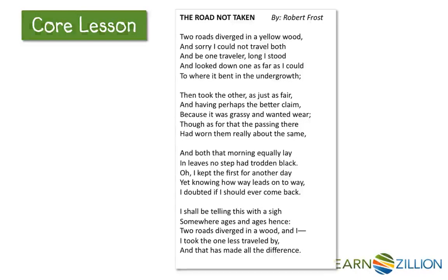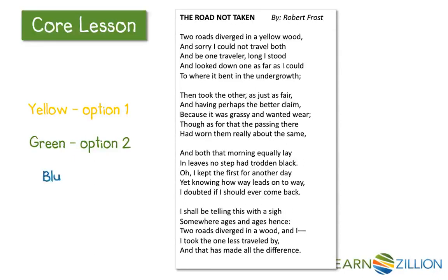Let's start by re-reading The Road Not Taken and highlighting lines that relate to the speaker's two different options. Let's use a few different colors — yellow for details related to option one, green for option two, and a third color, blue, for any similarities I find.